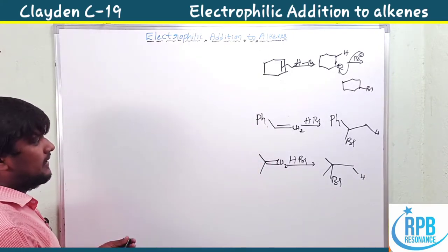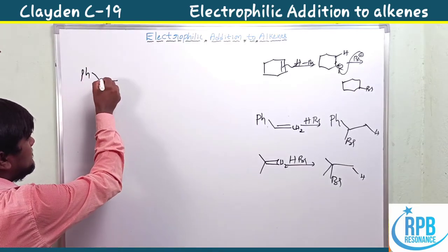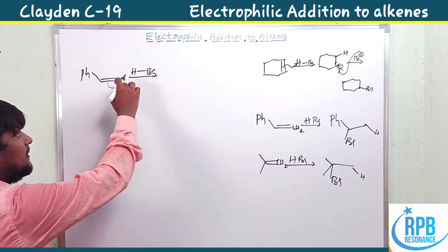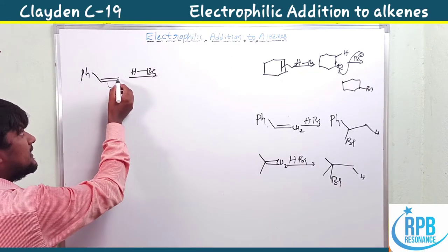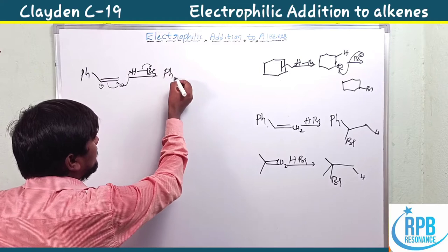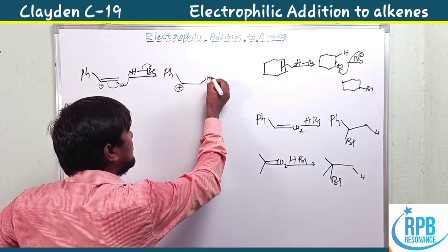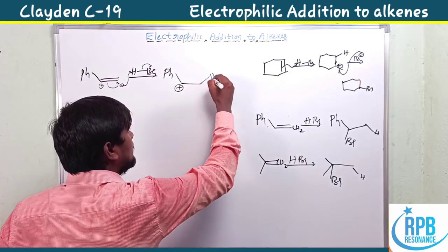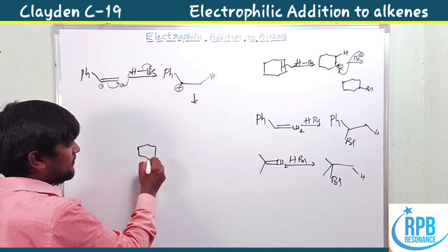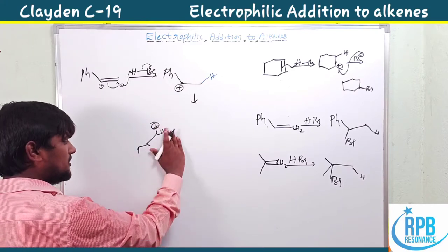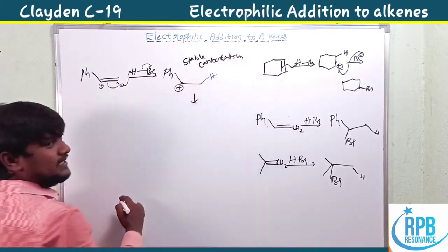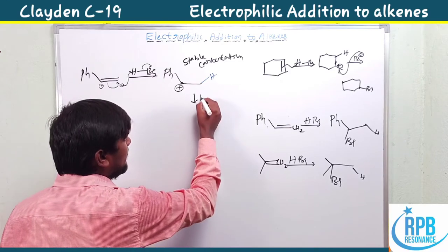Let's explain the product for styrene. In the first type of product, if electrons shift toward the terminal position, one carbon becomes negative and the other positive. The negative end abstracts the proton, forming a carbocation connected to the phenyl group — that is a benzylic carbocation. Benzylic carbocation is stable, and Br⁻ then attacks to give the product.